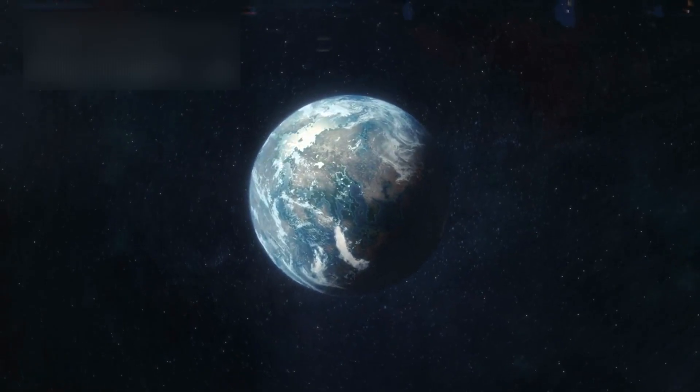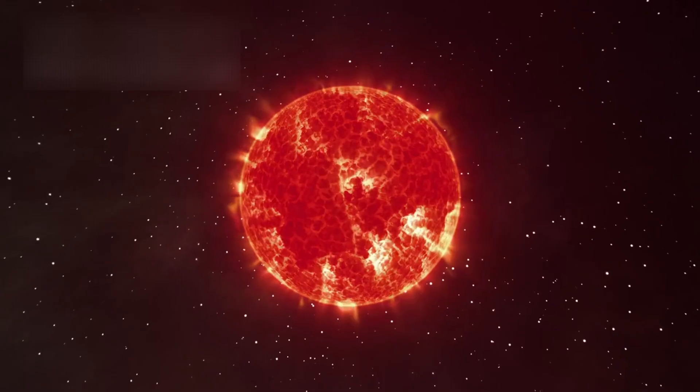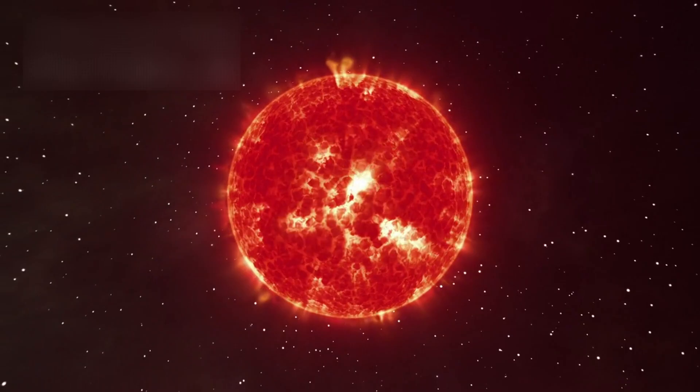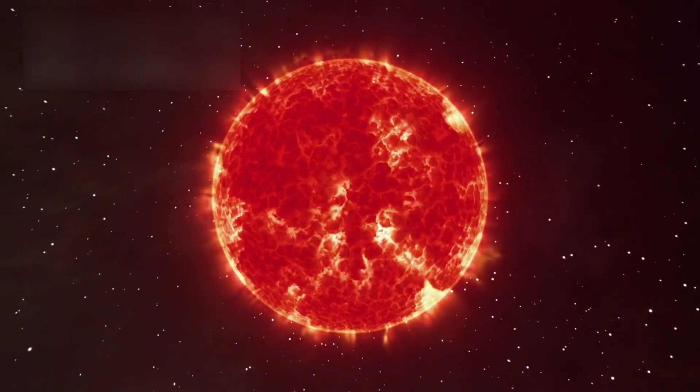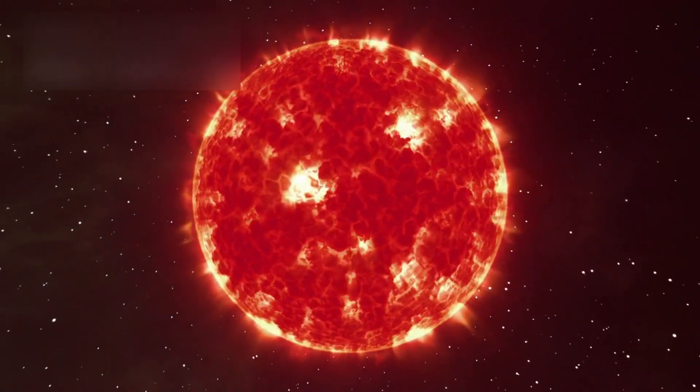K218b is no ordinary exoplanet. Located about 124 light-years away in the constellation of Leo, it orbits a small, cool red dwarf star.